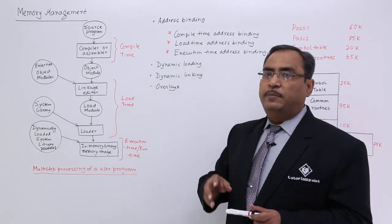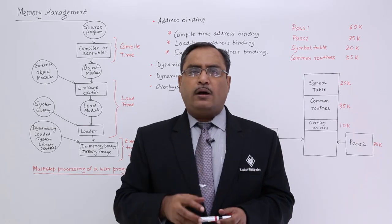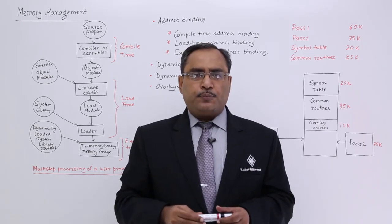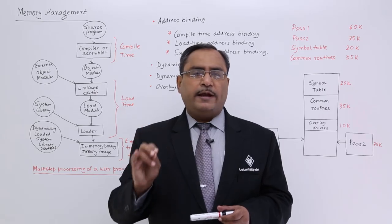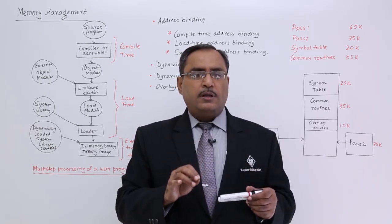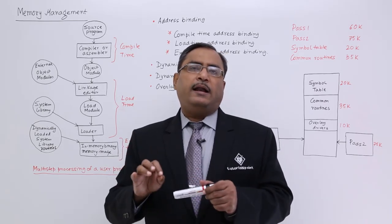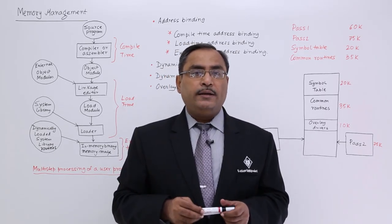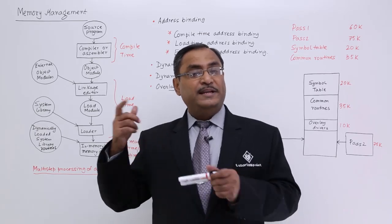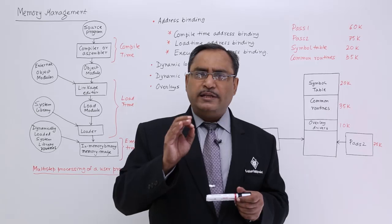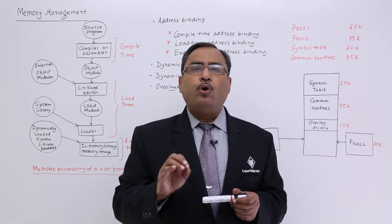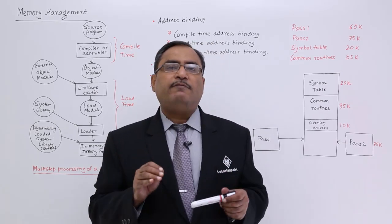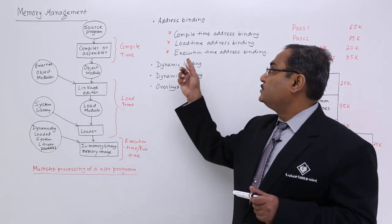The next one is load time address binding. In load time address binding, when the program is compiled, all the addresses are in relocatable addressing format. For example, suppose I have purchased a flight ticket. I know the flight number, departure time, arrival time, and date — everything. But I do not know which seat I am going to get, whether it is at the rear end, near the wing, or at the front. When I reach the counter and get a boarding pass, only then do I know my seat number and location within the flight. The same thing happens in load time address binding.